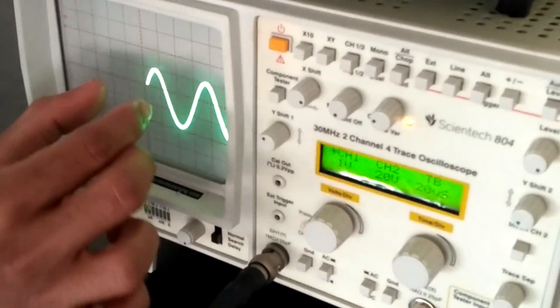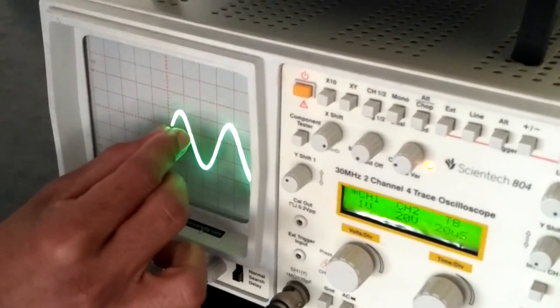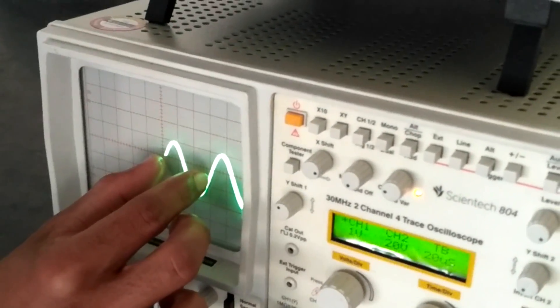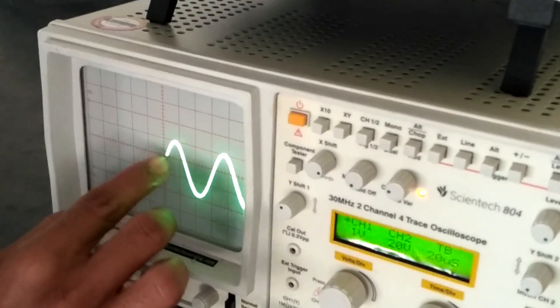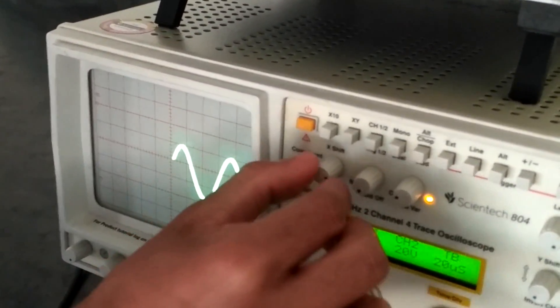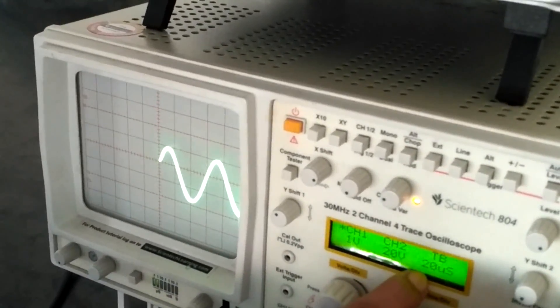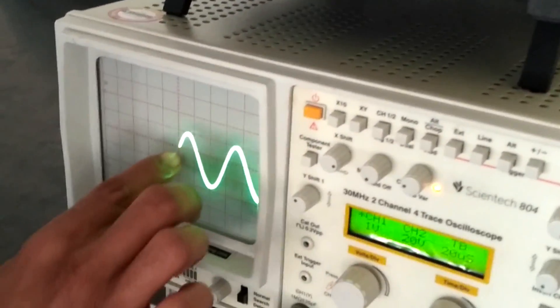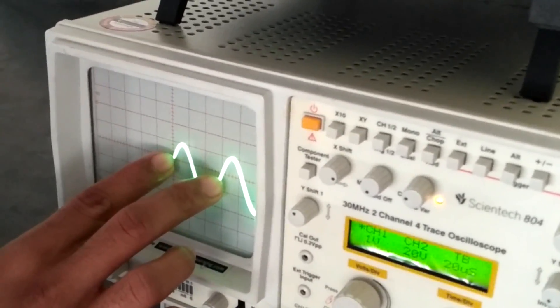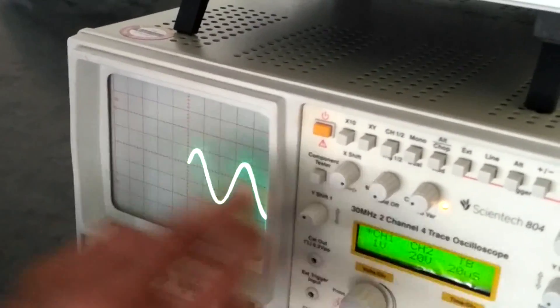Since the waveform is on one division i.e. 1 volt, the time base, that is time period for each division, is 20 microseconds. For each cycle we have to measure the time: 20, 20, 20. Three divisions. We have to measure the value for 3 divisions. 3 into 20, that is 60 microseconds. So the time period of this waveform is 60 microseconds.